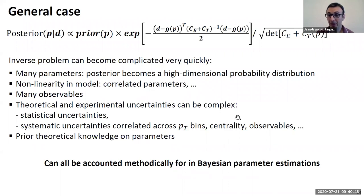Now, these uncertainties can become quite challenging as well. The stat uncertainties, in general, are relatively straightforward to handle, but you can have all kinds of systematic uncertainties, which can be correlated across PT bins, across centralities, across observables.